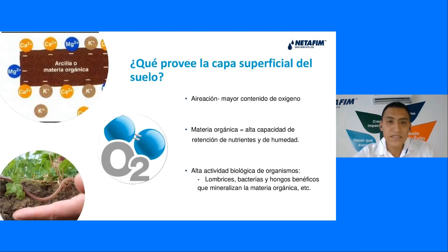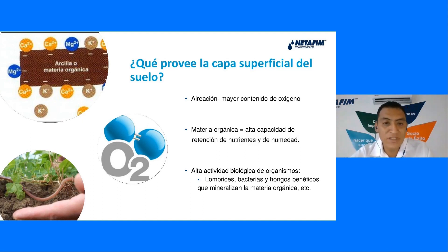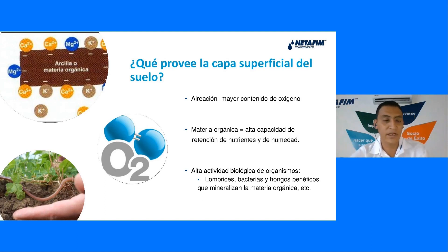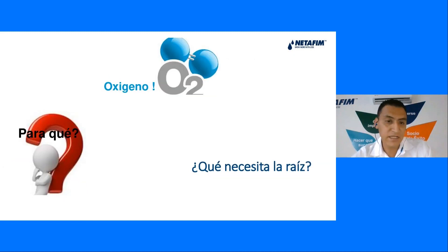¿Y qué provee la capa superficial del suelo? Para que la raíz esté cómoda, necesitamos aireación y mayor contenido de oxígeno. La materia orgánica debe tener alta capacidad de retención de nutrientes y humedad, y alta actividad biológica de organismos como lombrices, bacterias y hongos que mineralicen la materia orgánica. Esto es importante para tener una buena captación de nutrientes.